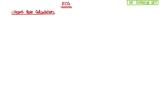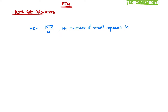Starting with today's topic — heart rate calculation. What is the formula for calculating heart rate from ECG? The formula is: heart rate = 1500 / N. Here, N denotes the number of small squares in between two R waves, or the RR interval.